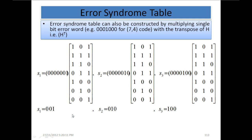We can construct the error syndrome table using H transpose. Each error pattern E indicates the location of the error: for example, one pattern indicates error in the first bit from the right, another indicates error at location number 2 from the right, and so on.